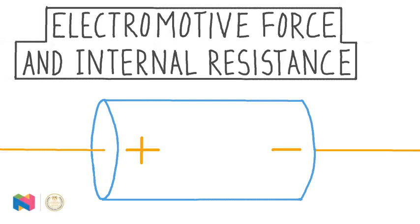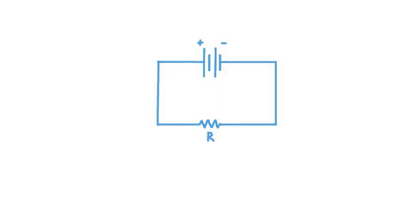In this lesson, we're talking about electromotive force and internal resistance. This topic will give us inside information on how electrical circuits work, and specifically we'll be learning about batteries and cells in these circuits. As we get started, let's consider this simple electrical circuit consisting of a battery and a resistor with a resistance R.